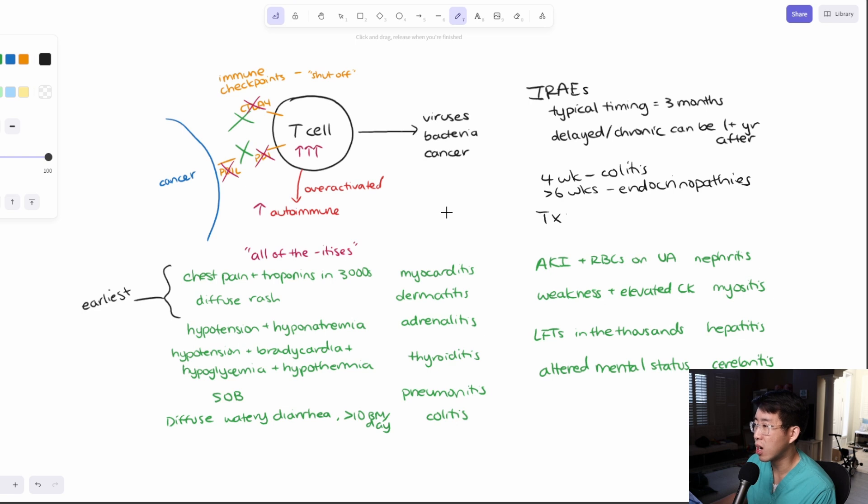Now, what is our treatment for this? So again, all of this is from over activation of our immune system. So what is a treatment that we can give to calm the immune system down and kind of shut it off again? That's actually going to be steroids.